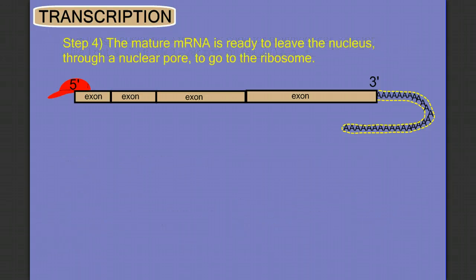So now our mature transcript is ready to leave the nucleus through a nuclear pore and go to the ribosome for translation. Come back for the next video, we'll go through the details of translation and its steps, initiation, elongation, and termination.